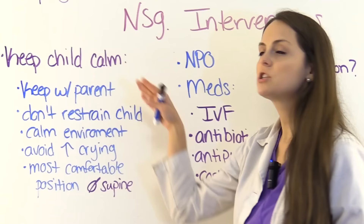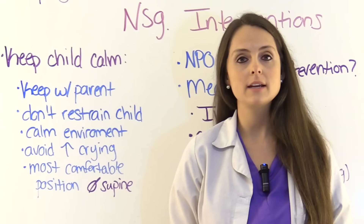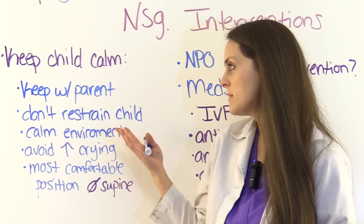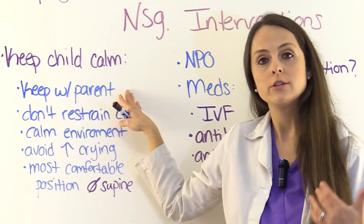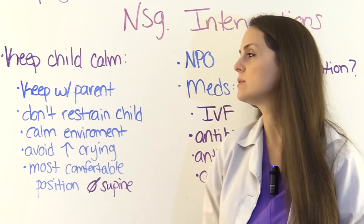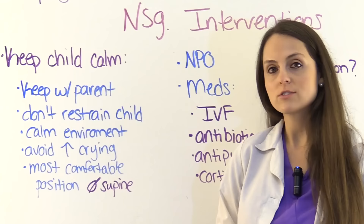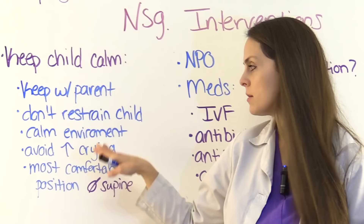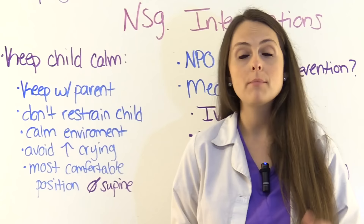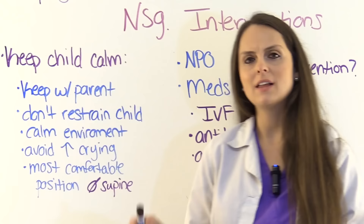Keep the child calm — don't do anything that will cause them to cry or become agitated, as that can worsen the airway. Keep the child with the parent or guardian during treatments, such as on the parent's lap, and allow them to be as close as possible. Don't restrain the child. Keep the environment calm and allow the child to be in the most comfortable position, usually the tripod position. Avoid lying them flat in the supine position because that impedes airflow.